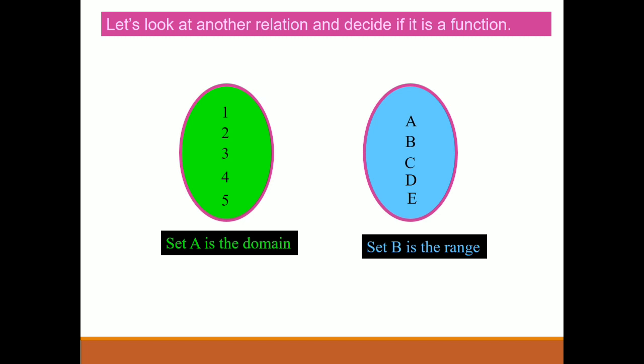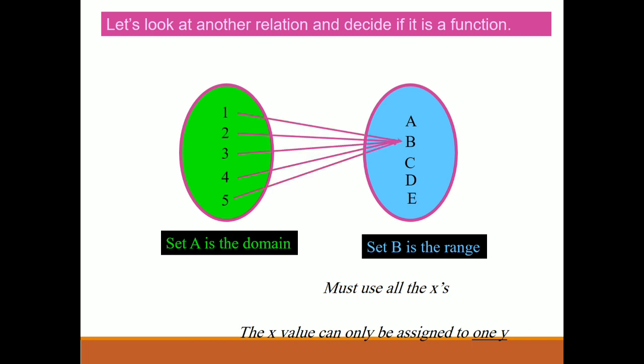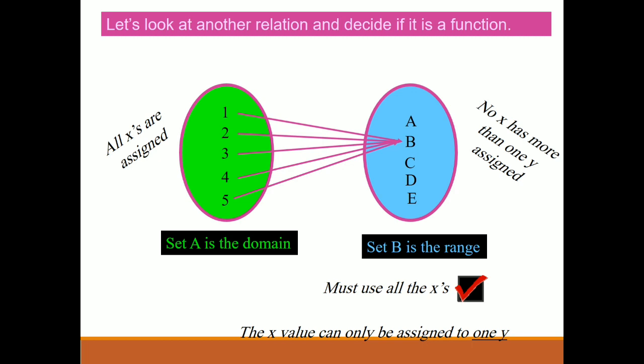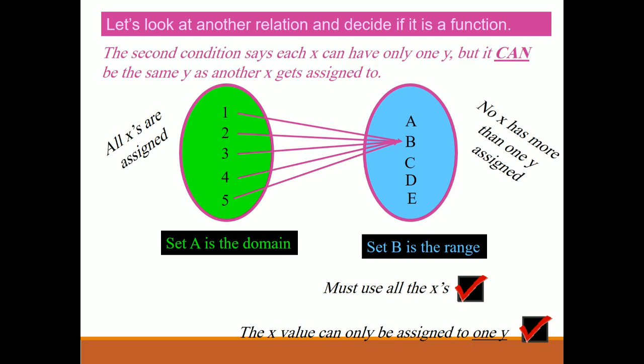Let us look at another relation and decide if it is a function. Remember, it must satisfy the two basic conditions: it must use all x values, and each x value can only be assigned to one y. If all x values are assigned and no x has more than one y assigned, it satisfies both conditions. So, this is a function.